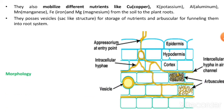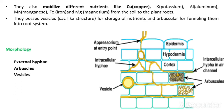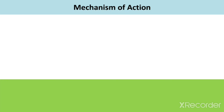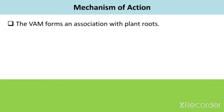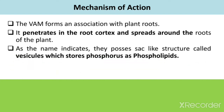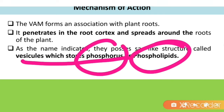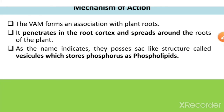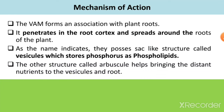For morphology, three points are important: external hyphae, arbuscules, and vesicles. Regarding the mechanism of action, VAM forms an association with plant roots, penetrates the root cortex, and spreads around the roots. The vesicles, which are sac-like structures, store phosphorus and phospholipids. The arbuscules help in bringing distant nutrients to the vesicles and roots.